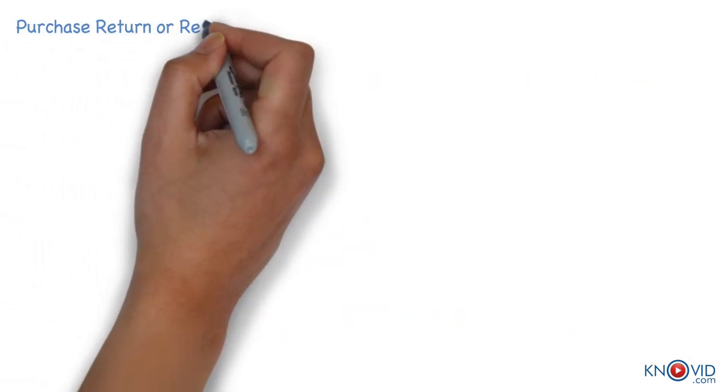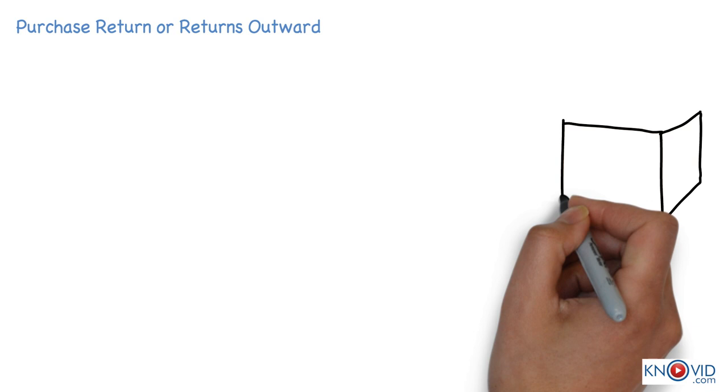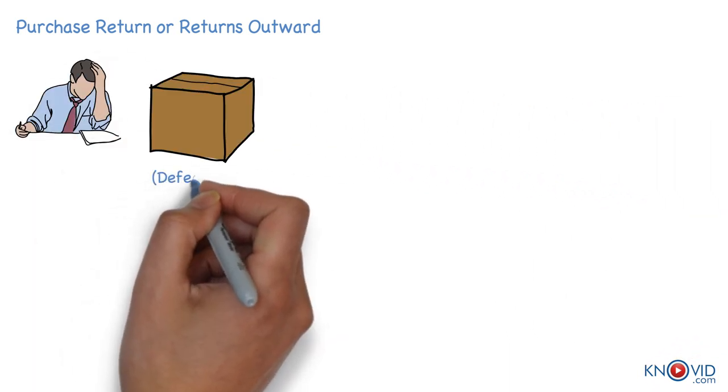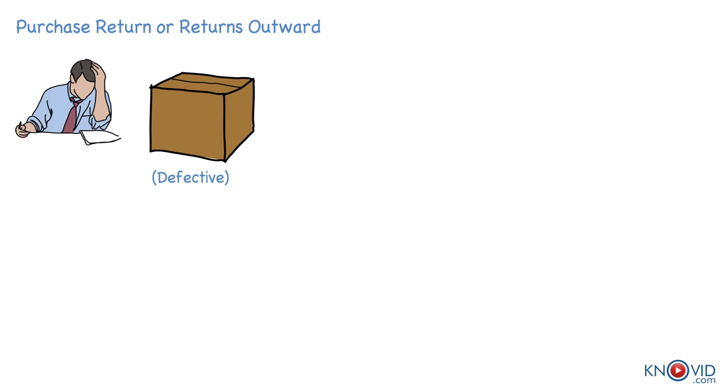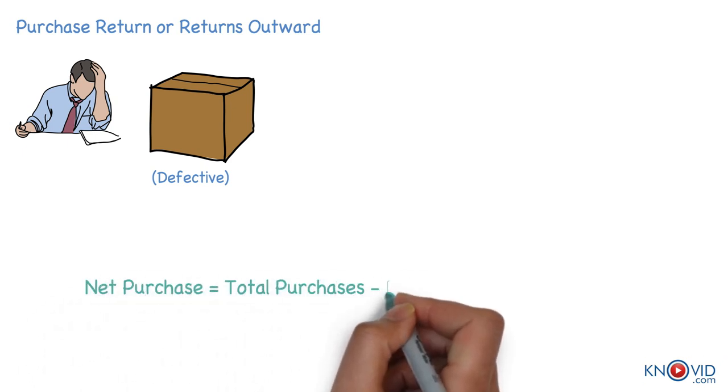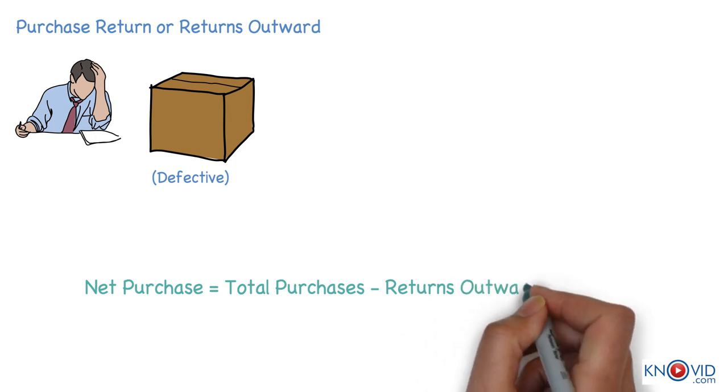Total purchases include both cash and credit purchases. Purchase return or return outward are goods that are returned to the suppliers due to defective quality or because they are not as per terms of purchase. To find net purchases, purchases returned is deducted from the total purchases.